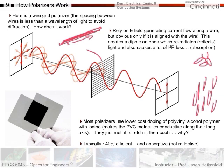Once the conductive molecules are aligned, an E-field along that axis causes electrons to travel back and forth, producing conduction and absorption of that polarization. E-field perpendicular to the molecular axis doesn't allow enough electron movement, so that polarization passes through. These films are about 40% efficient — meaning 40% of the total incoming light exits as polarized light. Theoretically perfect would be 50%, but 40% is quite good. This is an absorptive polarizer, losing energy to I²R-type effects.